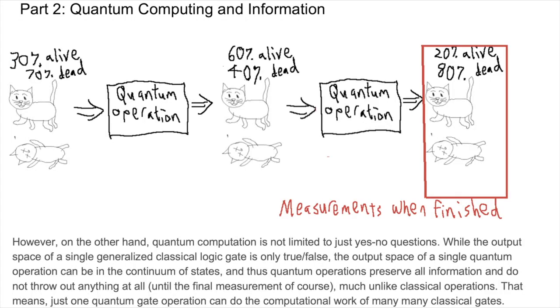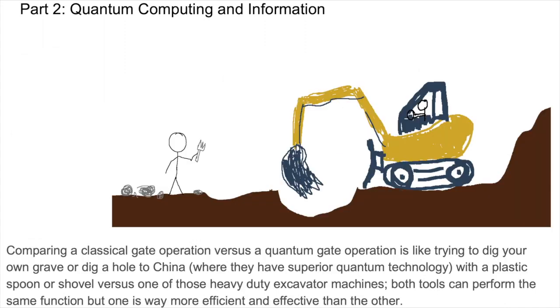However, on the other hand, quantum computation is not limited to just yes-no questions. While the output space of a single generalized classical logic gate is only true-false, the output space of a single quantum operation can be in the continuum of states, and thus quantum operations preserve all information and do not throw out anything at all until the final measurement, of course, much unlike classical operations. That means just one quantum gate operation can do the computational work of many classical gates. Comparing a classical gate operation versus a quantum gate operation is like trying to dig your own grave or dig a hole to China where they have superior quantum technology with a plastic spoon or shovel versus one of those heavy-duty excavator machines. Both tools can perform the same function, but one is way more efficient and effective than the other.